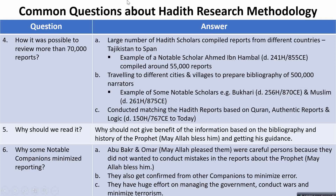How was it possible to review more than 70,000 reports? Now it has become easier. Hadith scholars through their research wrote many books. The biggest book is by Ahmed bin Hanbal, whose death was at 241 Hijri, which is 855 CE, and he wrote 55,000 reports in one book. Many other scholars also conducted further books, traveling to different cities and villages.